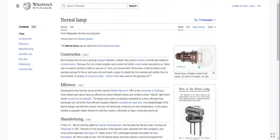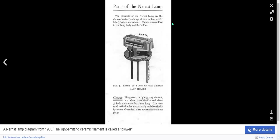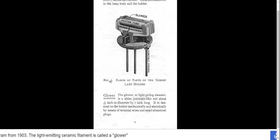Let's look at these pictures — there's the Nernst lamp at 0.5 amps. This has to be heated before it can actually produce light. Here are the parts of the Nernst clamp: glower, heater tube, contact prong. Interesting.